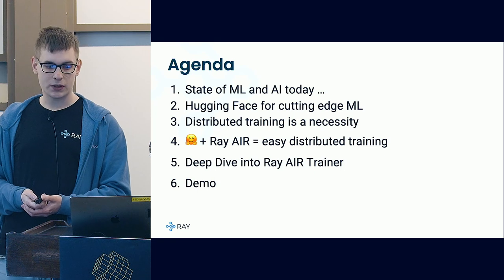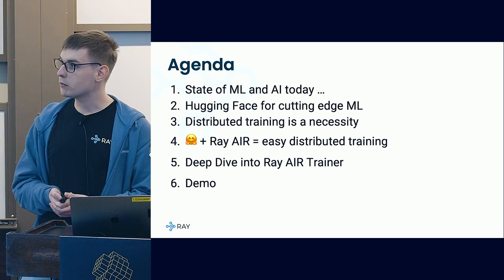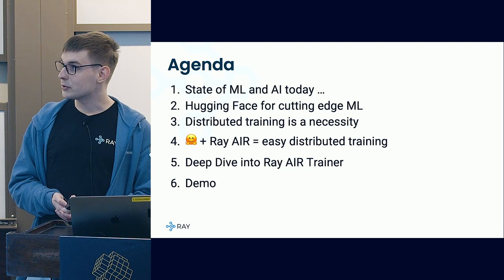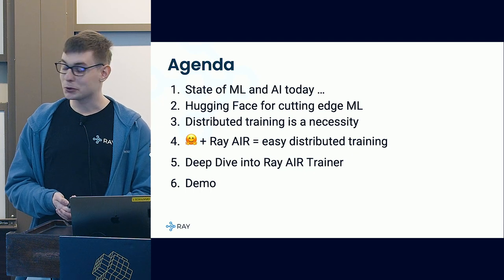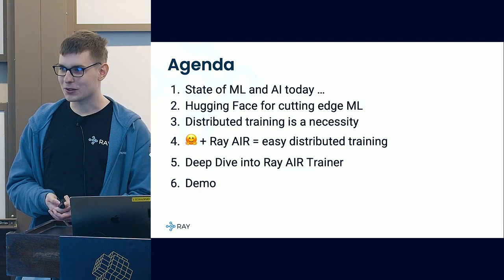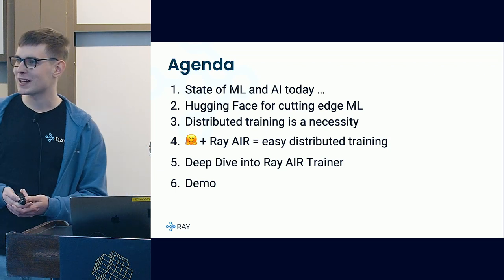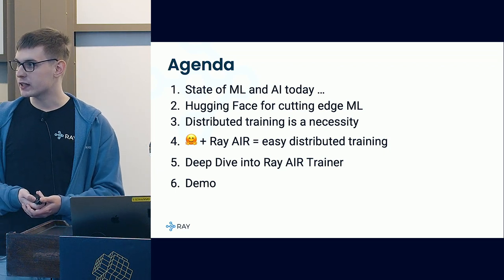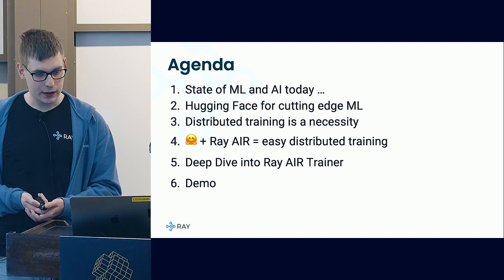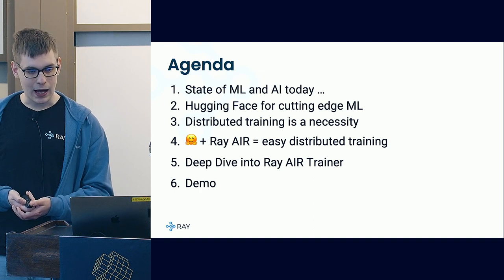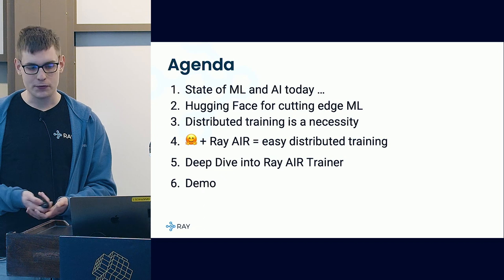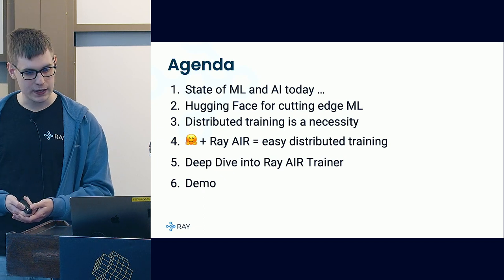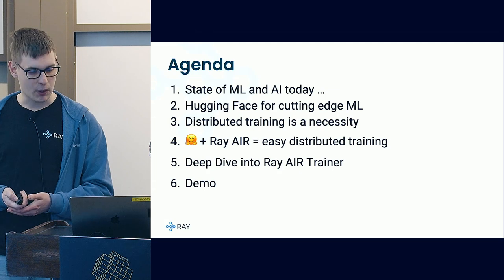So just a quick overview of the agenda. We are going to go over the state of ML and AI as it is today. I'll quickly recap what Hugging Face is for those who may not know it — but guessing by the show of hands, it's not going to be necessary. Then I'm going to go over why distributed training is simply a necessity today, and how you can combine Hugging Face Transformers and Ray AI Runtime, or Ray AIR, to make that super easy. We'll conclude with a quick demo.